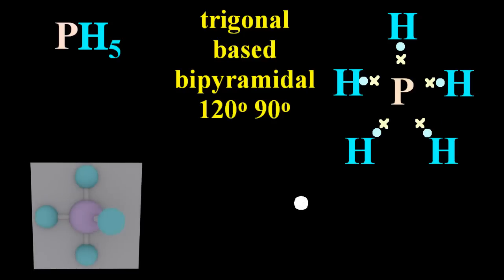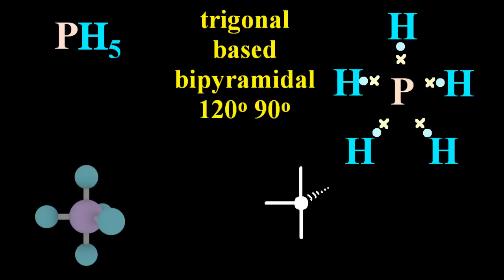Now how would I draw that in two dimensions? Well, the plane of the molecule goes through four atoms, so I'm going to put four atoms in the plane represented by those straight lines there.